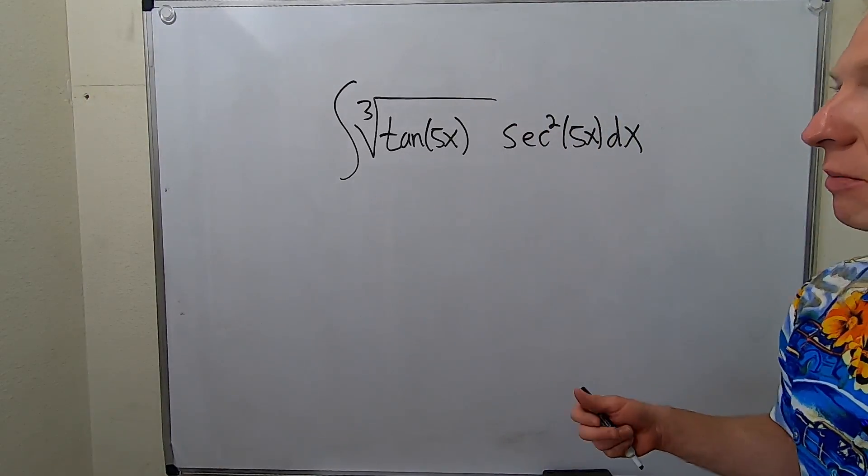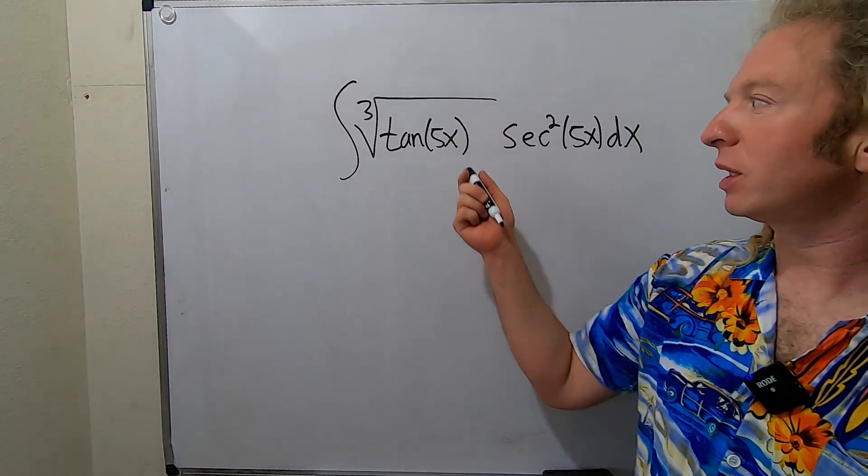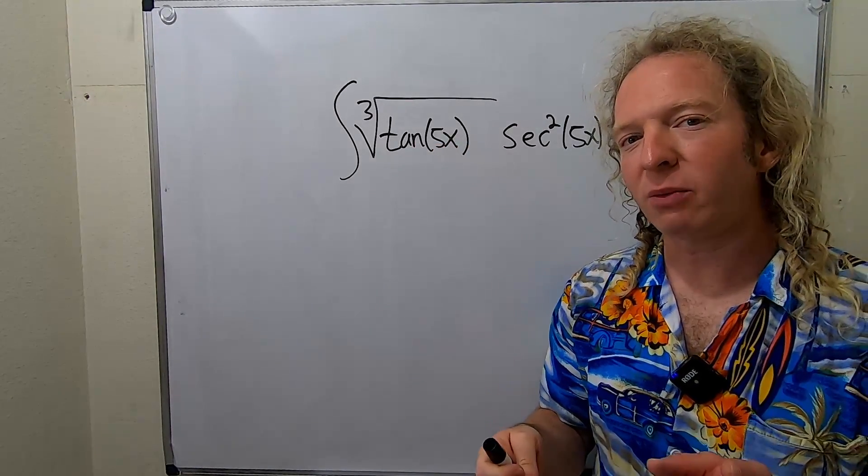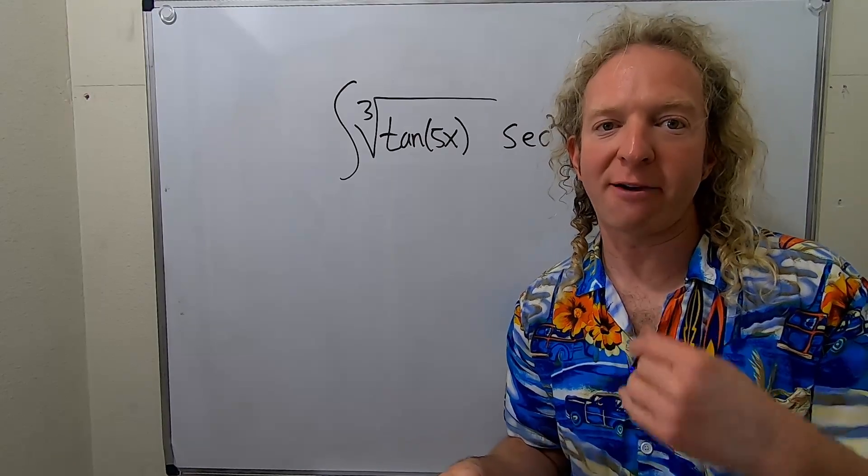So there's a couple ways of doing this problem. At first glance, you might think we can let u be equal to 5x. That would work, but then we would have to do another u-substitution after that.